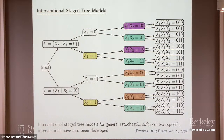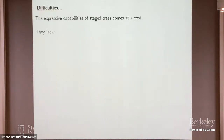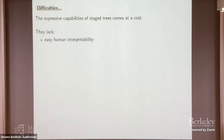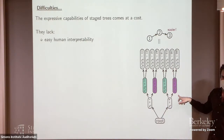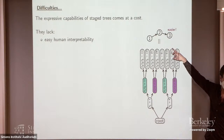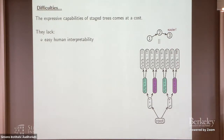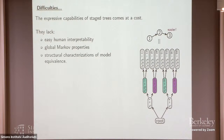This brings us to the downside of working with these models. While they have a high level of expressive capability, this comes at a cost. In particular, they lack easy human interpretability. The stage tree we drew actually just encodes the CI relation that x1 is independent of x3 given x2 — so it's much easier just to work with the causal path. At the same time, this added level of expressiveness means it's more difficult to prove the theorems that we get so much mileage out of with DAG models. It's difficult to come up with global Markov properties or structural characterizations of model equivalence — things that drive our learning algorithms.